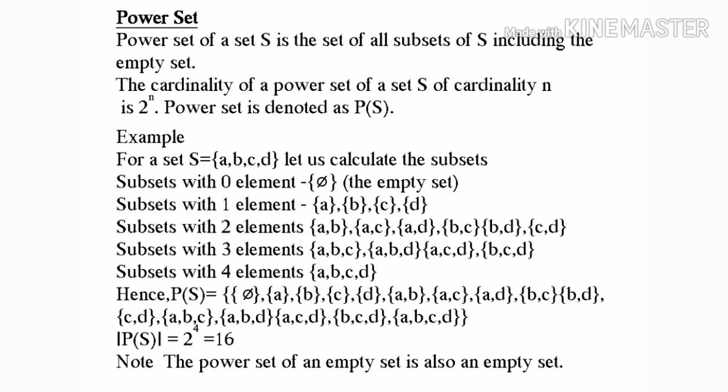Power set. Power set of a set S is the set of all subsets of S, including the empty set. The cardinality of a power set of a set S of cardinality N is 2 power N. Power set is denoted as P(S). For example, for a set S equal to {A, B, C, D}, let us calculate the subsets. Subsets with 0 elements: the empty set.